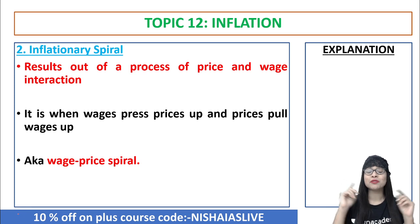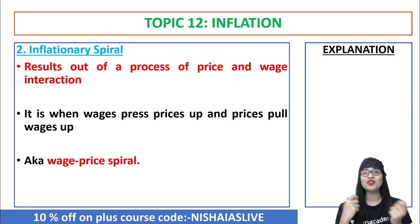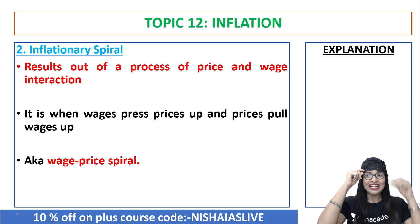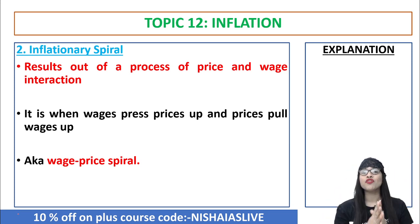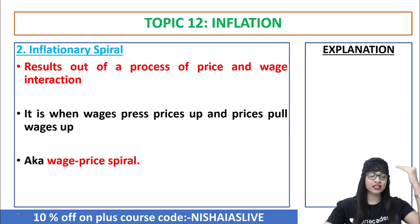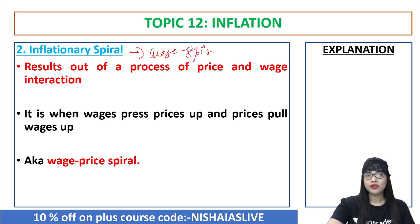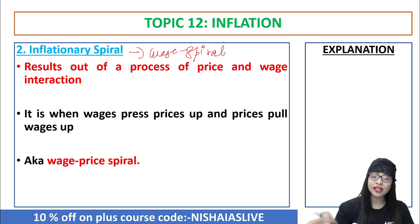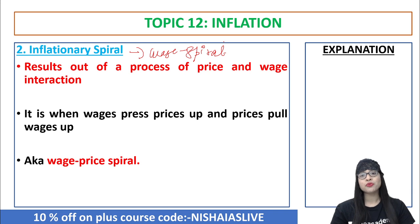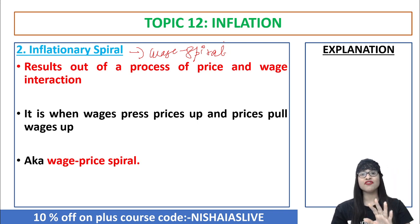The next important topic is inflationary spiral. The term spiral relates to a process of price and wage interaction. Whenever you hear inflationary spiral, think of laborers, because laborers are those who get wages — that is why it is also called wage spiral. Inflationary spiral can also be called wage price spiral. For example, due to an increase in wages — say you were getting 350 per day as a laborer and wages are increased to 500 per day — you have an extra 150.